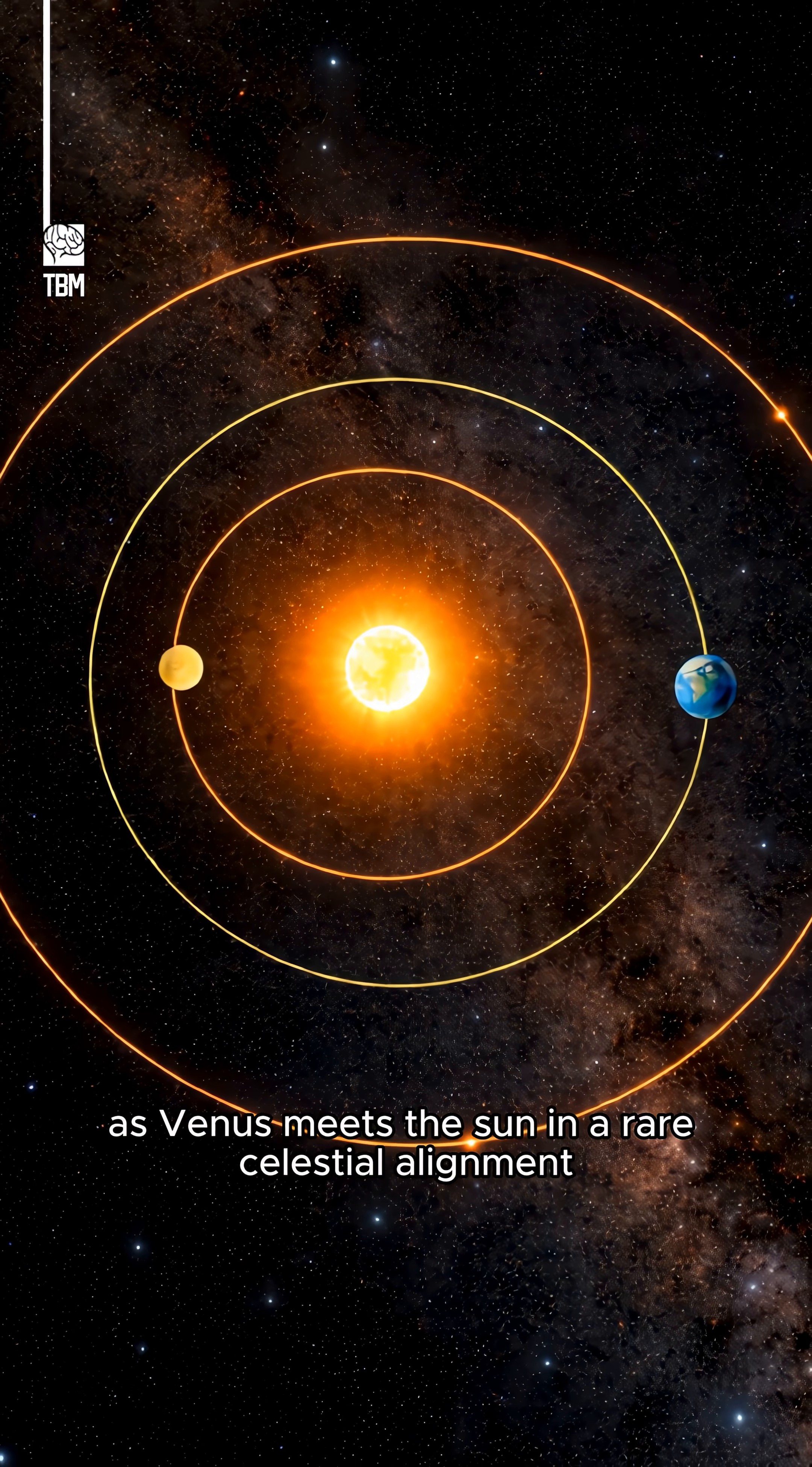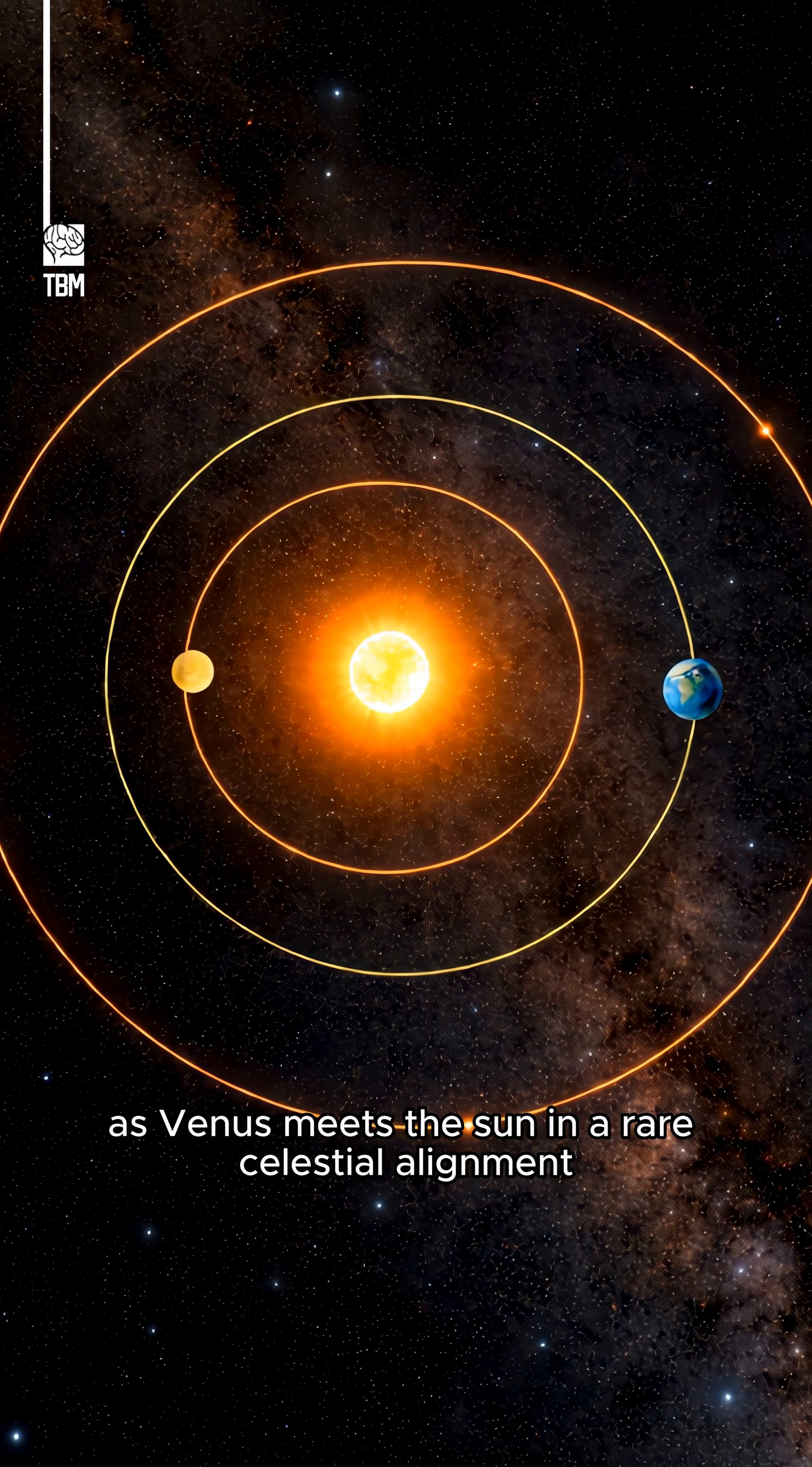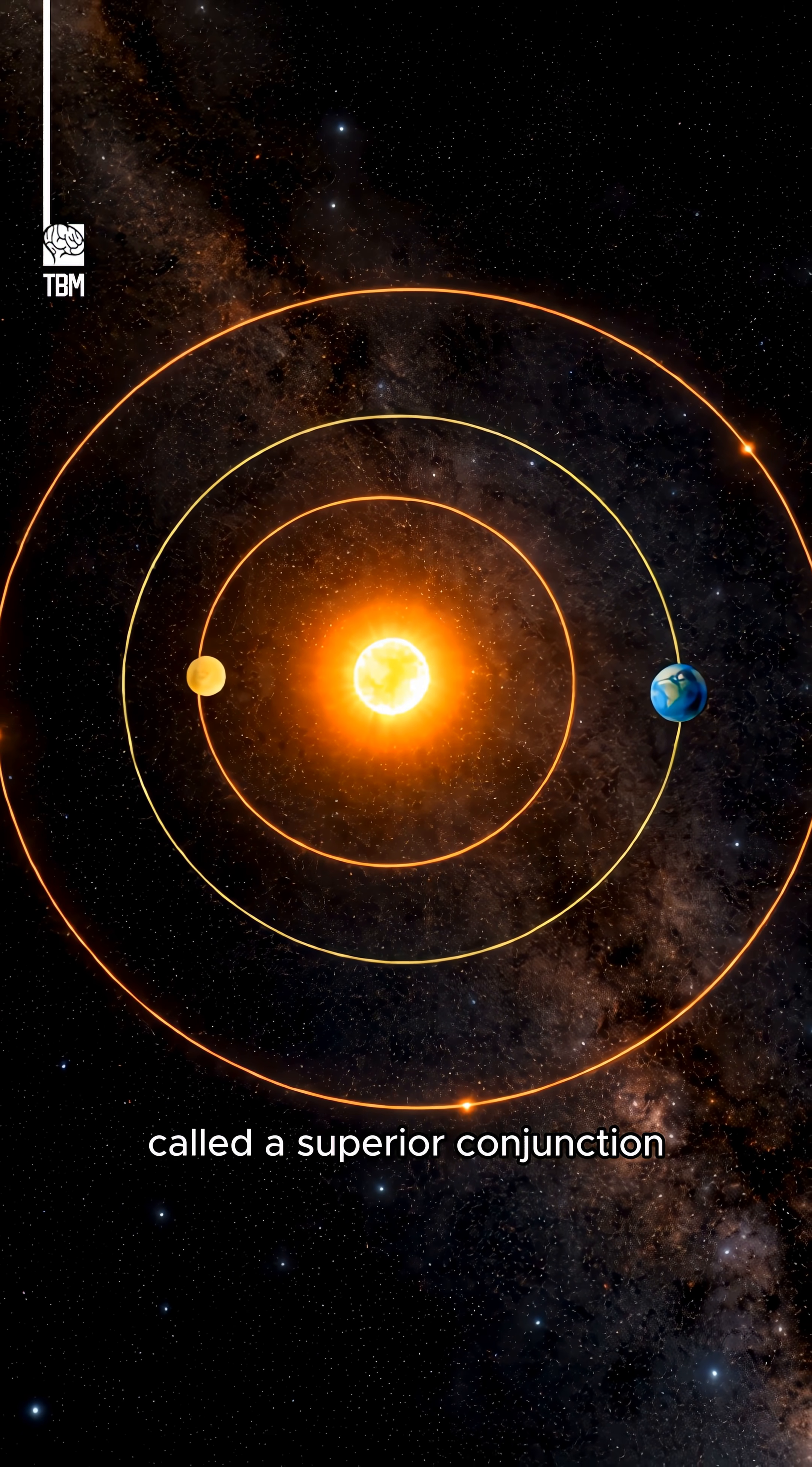Today, love meets light as Venus meets the sun in a rare celestial alignment called a superior conjunction.